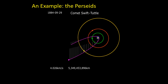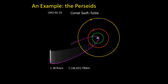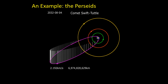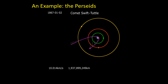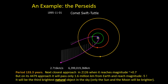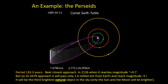I'll illustrate this with the Perseids, which is probably the best-known periodic meteor shower. Comet Swift-Tuttle is a long-period comet — it takes 133 years to orbit the Sun, varying in its orbit from 0.95 AU to just over 50 AU. Its next closest approach will be in 2126, when it reaches magnitude 0.7, but in 4479 it will pass only 1.6 million kilometres from Earth and reach magnitude minus 5, making it the brightest object in the sky other than the Sun and Moon.